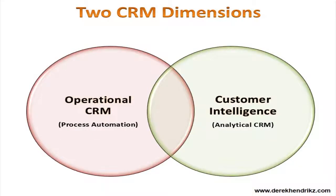A CRM system basically has two dimensions: one is operational and the other is customer intelligence. The operational dimension automates operational processes, and the intelligence dimension analyzes the intelligence behind these processes. So when a customer walks through the door of your business, there is a specific automated process which takes place, based on intelligence we've gathered and analyzed to give that customer the best possible customer experience.